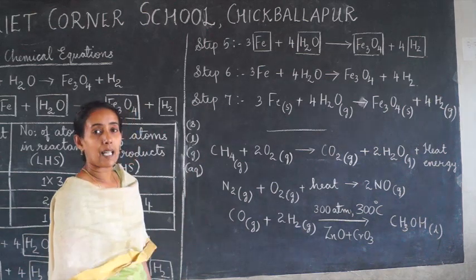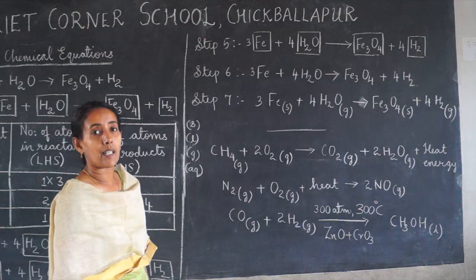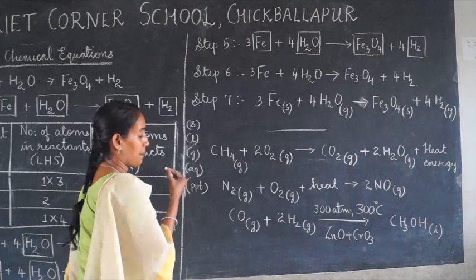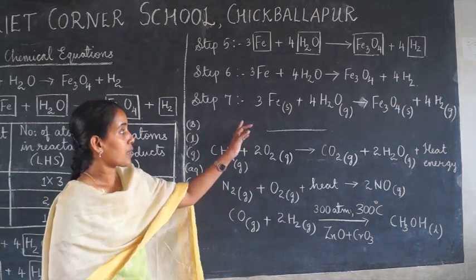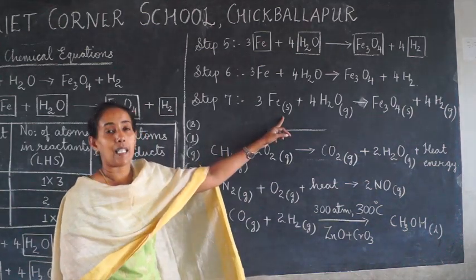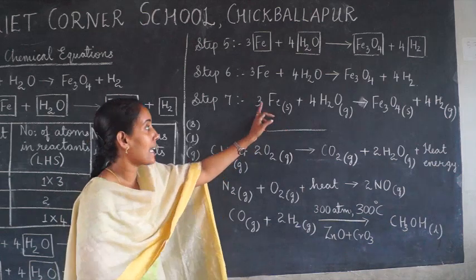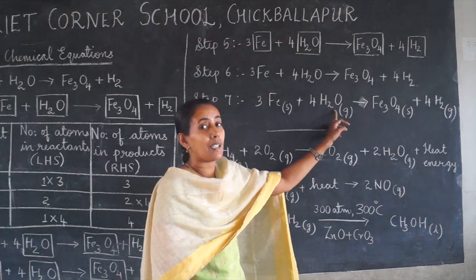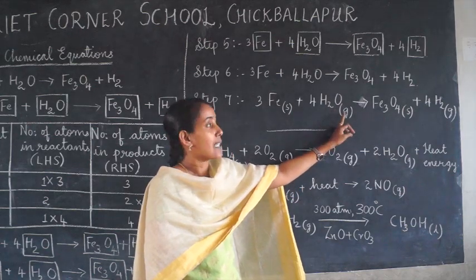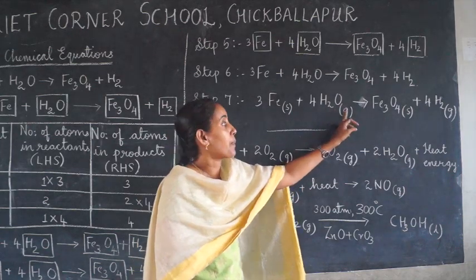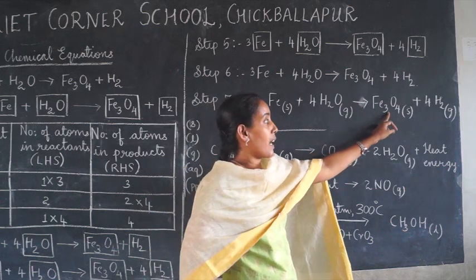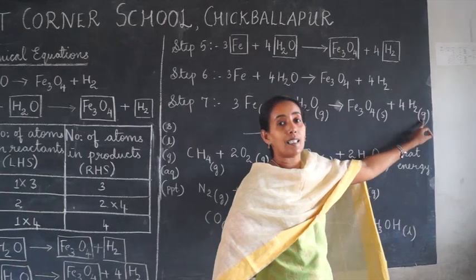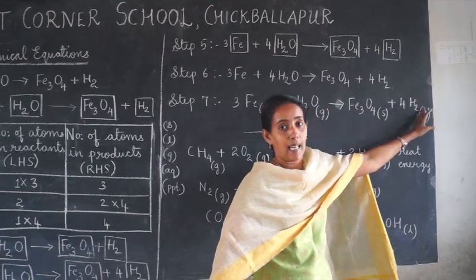If any insoluble solid or precipitate is formed, you can write it as PPT. So: 3Fe(s) reacts with 4H₂O(g) — steam means it is in gaseous form — to form Fe₃O₄(s) iron oxide in the solid state, plus 4H₂(g) hydrogen in the gaseous state. This reaction is an example where hydrogen gas is evolved.